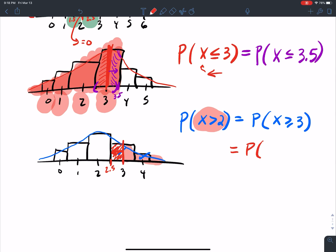So the continuity correction is x greater than or equal to 2.5. I cannot stress enough the importance of drawing this picture here to help you get this continuity correction correctly.